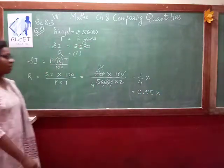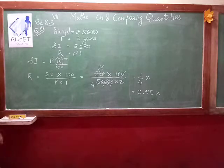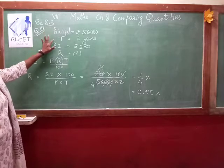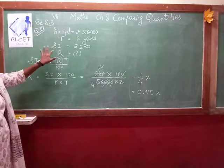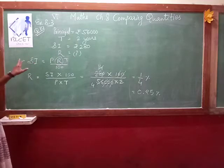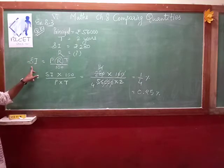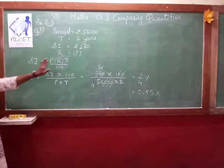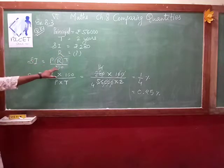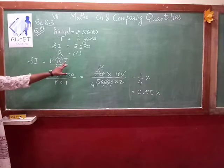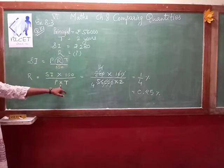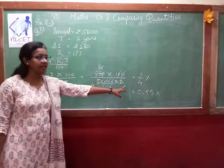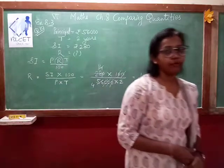Again I am repeating. First of all, list out all the data. Principal is given, time is given, simple interest is given. What is not given? Rate — that we have to find. We know the formula: simple interest equals P times R times T divided by 100. Make R the subject: R equals simple interest multiplied by 100 divided by P times T. Substitute the value, do the cancellation, and you will get the answer 1 by 4, that is 0.25 percent.